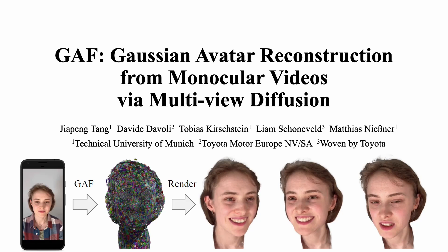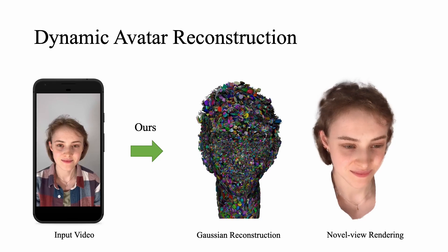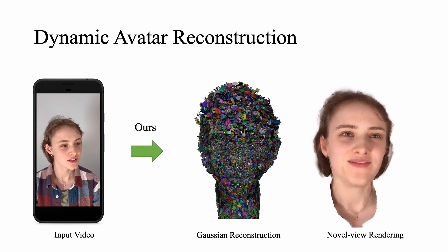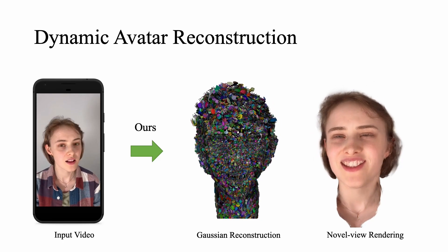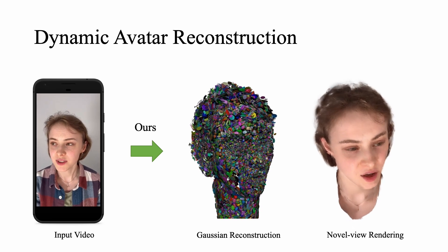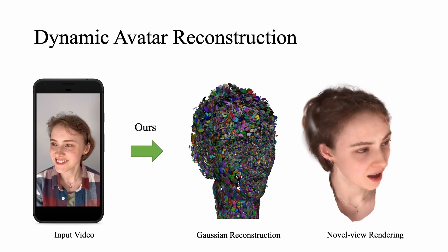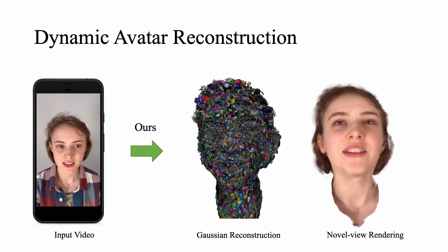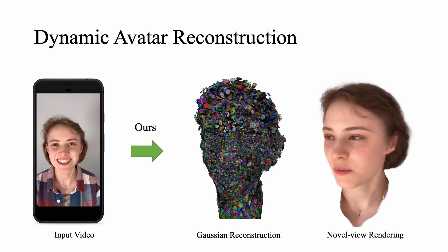We present GAF, a novel approach for Gaussian avatar reconstruction from monocular videos via multi-view diffusion. Given a monocular short video captured on commodity devices such as smartphones, our method achieves accurate dynamic avatar reconstruction and delivers photorealistic renderings from novel views.